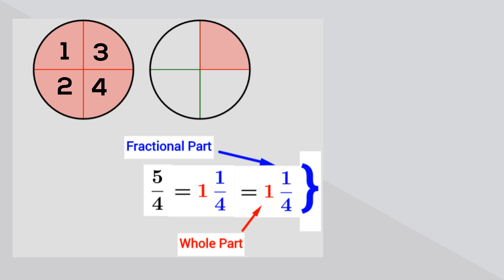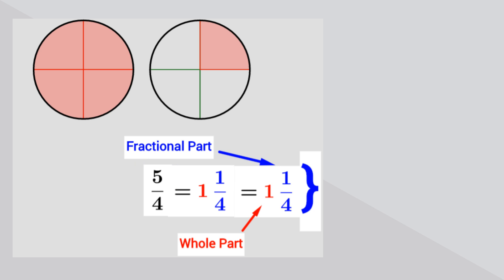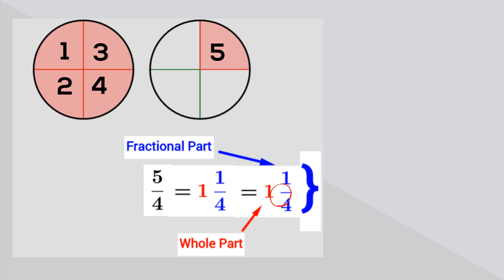If you take a look at the circles you will notice that they are divided into four parts. The improper fraction has five of these parts, and if you count them: 1, 2, 3, 4, 5. So you can express this as either an improper fraction of 5 fourths or a mixed number of 1 and 1 fourth. The improper fraction and mixed number are expressing the same thing — they're just written in a different format.